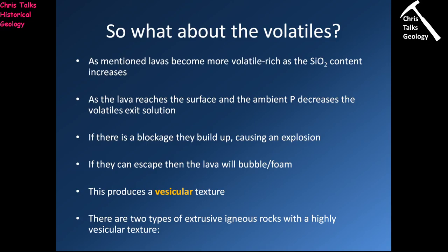If a lava flow contains volatiles, those will typically be in the form of gas bubbles. Depending on whether the gas bubbles can or can't escape from the magma, you may see them preserved. If you have a magma that's quite sticky and full of gas, the lava is going to cool before most of those gas bubbles can get away. You end up with a lava flow that looks a lot like Swiss cheese — what we refer to as a vesicular texture.